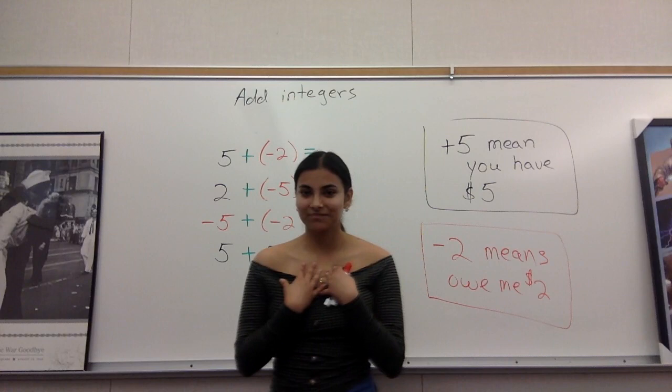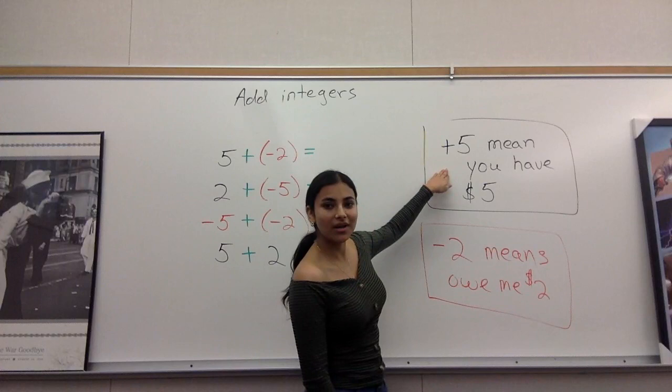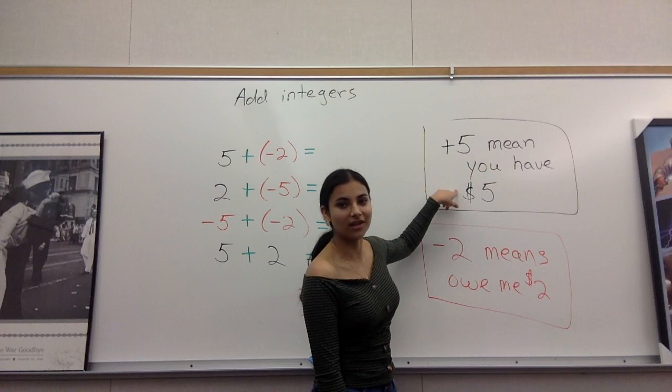is that if it's a positive number, it means that you have money. So let's say it's a plus five, it means that you have five dollars. And if it's a negative number like negative two, it means that you owe me money, you owe me two dollars.